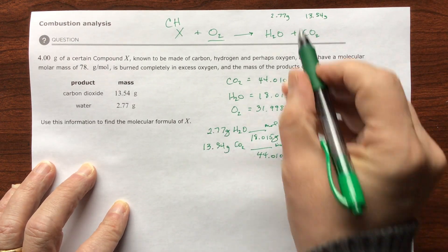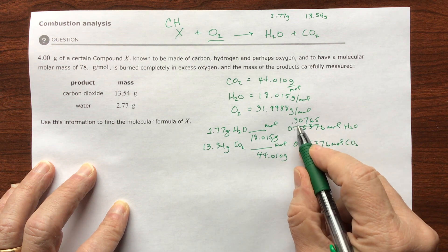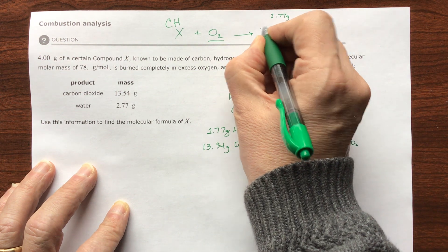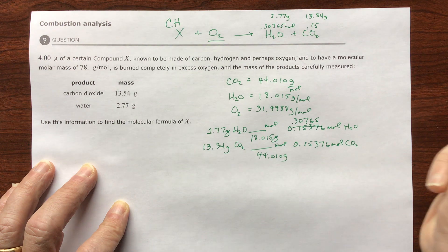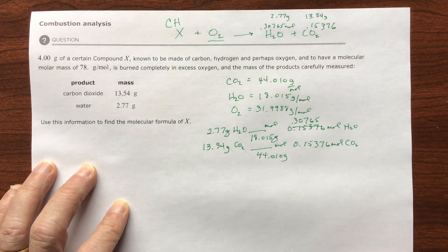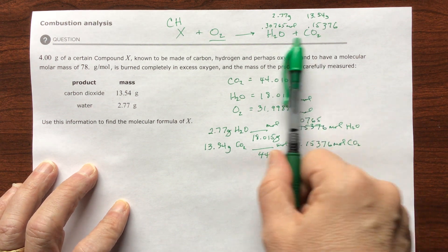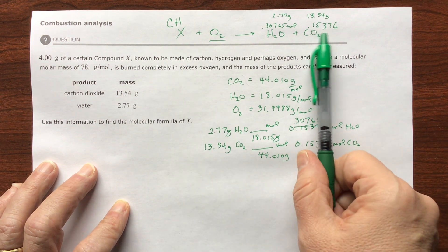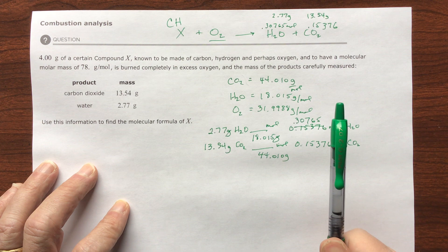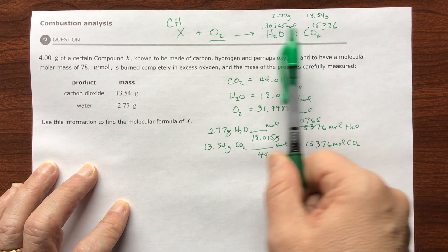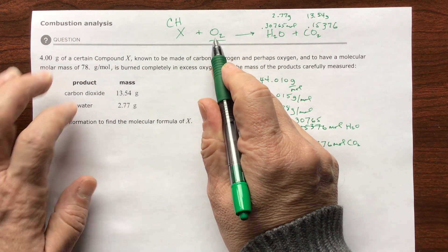I'm going to write these numbers here. The water is 0.30765 moles and the carbon dioxide is 0.15376 moles. Can you tell how these two are related? A balanced equation always has whole numbers. Can you see that this is half of this? This is 30 cents and this is 15 cents. There's two moles of carbon dioxide for every one mole of water.